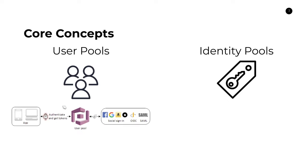In addition to the OAuth 2.0 token exchange, user pools allow you to use either Amazon Cognito itself as an identity provider or any social sign-on provider like Facebook, Google, Amazon, or Apple. As an application developer, you have two options: you can have users sign up and register their credentials directly within Amazon Cognito — providing a username, password, secret question and answer, etc. — in which case Cognito itself is the identity provider. Or, if you're using OAuth, you can also integrate other social sign-on providers into your user pool.